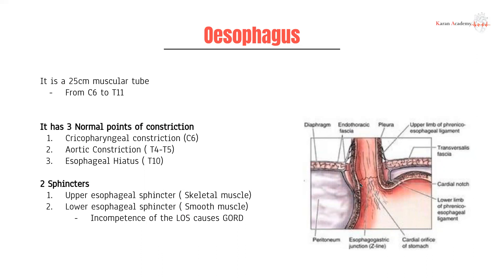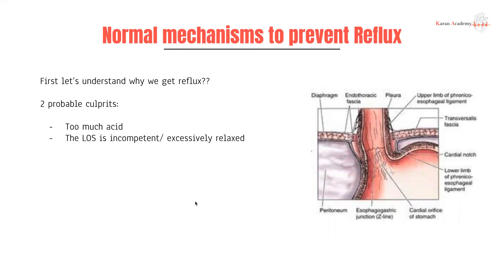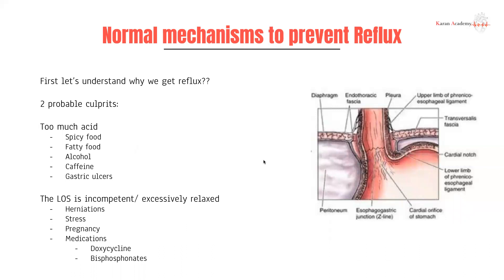Incompetence of the lower esophageal sphincter is going to result in GORD. The two main reasons why you can have GORD are either you have too much acid or too much irritation of the gastric mucosa, or you have an incompetent LOS. Too much acid can be caused by spicy foods, fatty foods, alcohol, caffeine, gastric ulcers, medications like prednisolone and NSAIDs — all of these cause excessive acid production.